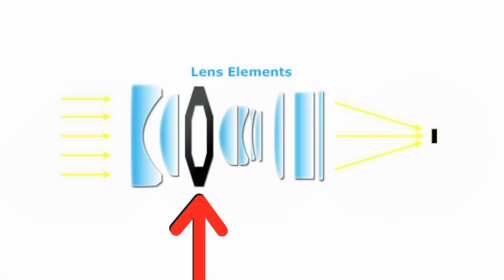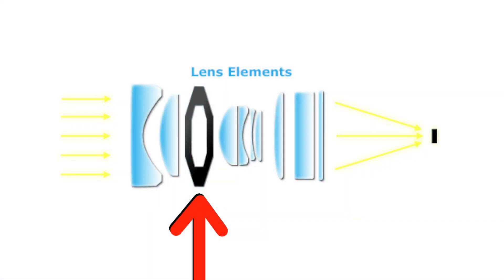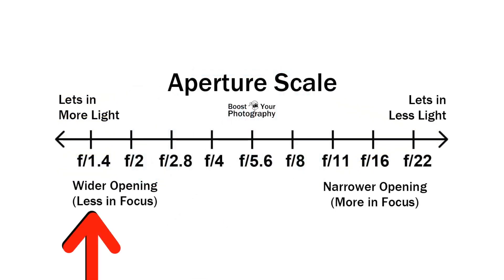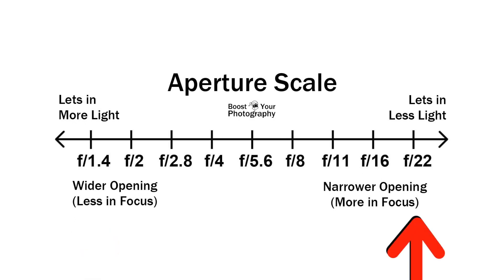The diaphragm is mounted in between the glass elements of a lens. When it's open all the way, the lens admits as much light as possible. When it's a tiny hole, obviously it doesn't admit as much light.